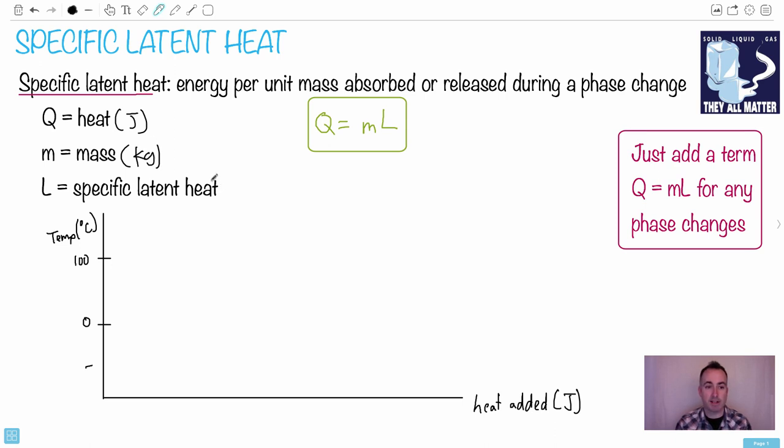And the specific latent heat is this property - it's the energy that's absorbed or released during a phase change. So it basically tells you how much energy is needed to change phases. For the units, if I get L by itself, I have to get Q divided by M. So that would be joules per kilogram.